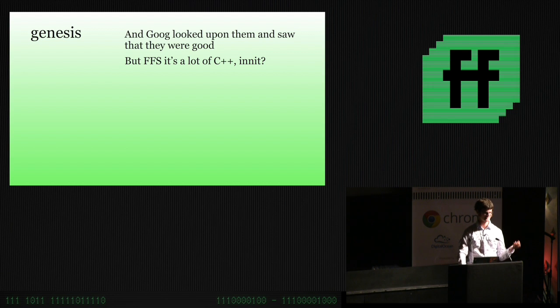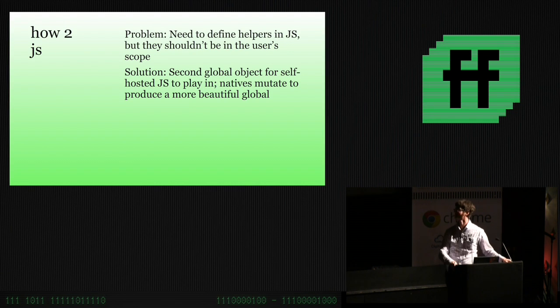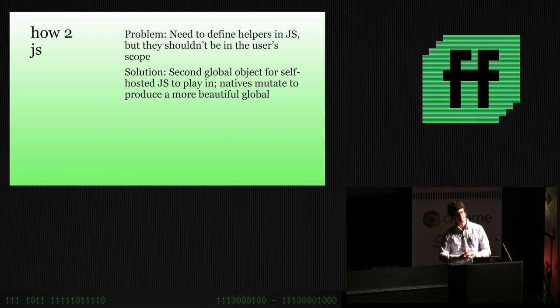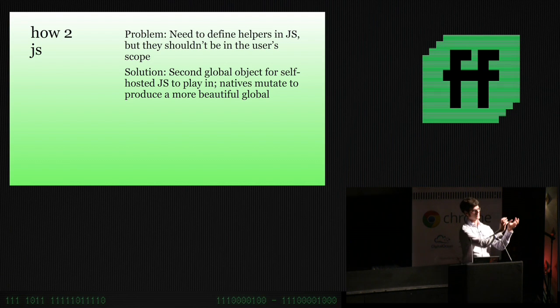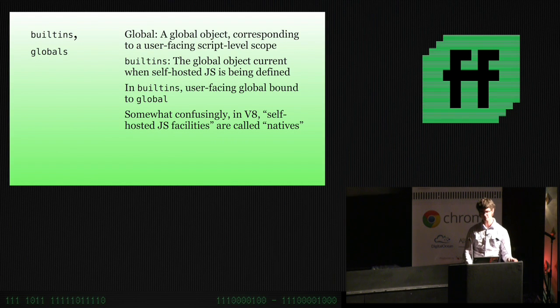We start to add all the things. We add the strict mode functions to use as templates for making other strict mode functions. We add the first global object. We start to put objects on it that are empty but simply bound to the names array and object. And it just goes on and on. You can imagine some future addition of marching them all onto the arc or something. And Goog looked on it and saw that it was good. But for fuck's sake. Here's where the JavaScript comes in, because you're writing a lot of C++ and it's not nice.